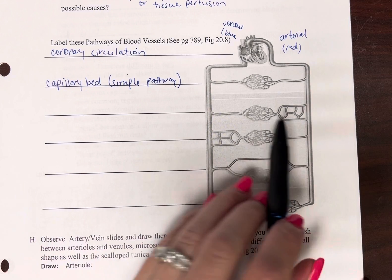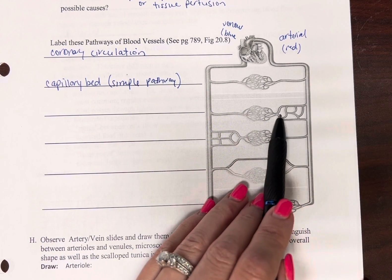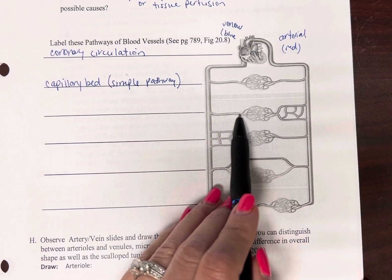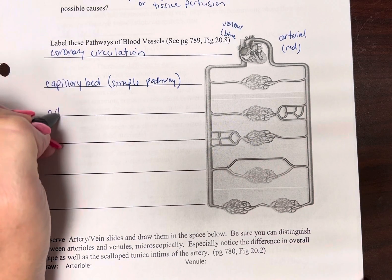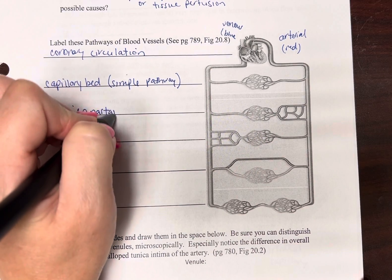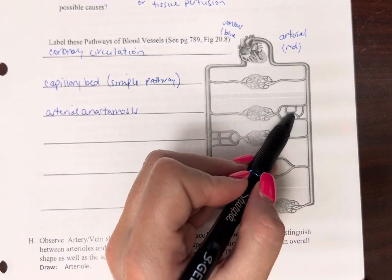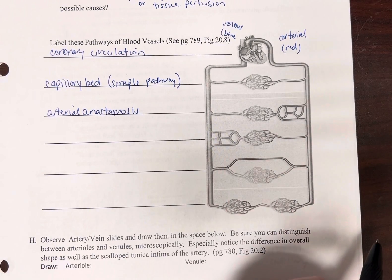Now here, you have extra arteries before you get to the capillary bed, only one exit. This is going to be the arterial anastomosis. So even if like one of these is blocked off, blood can still get to that capillary bed.